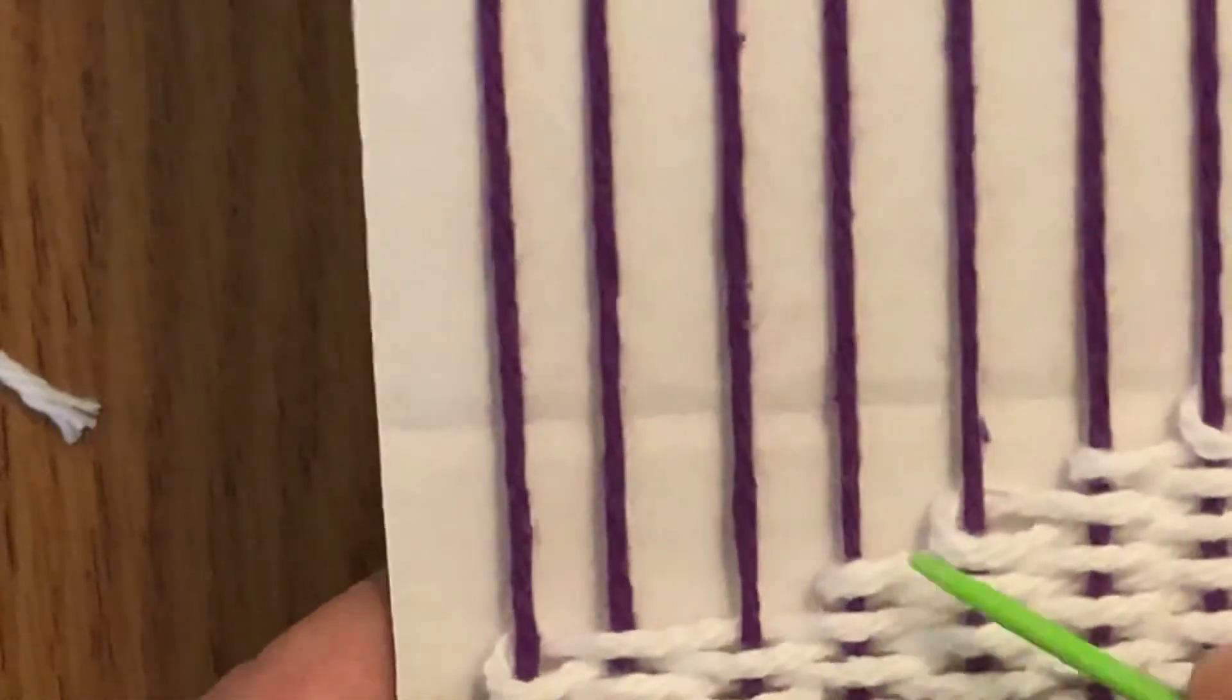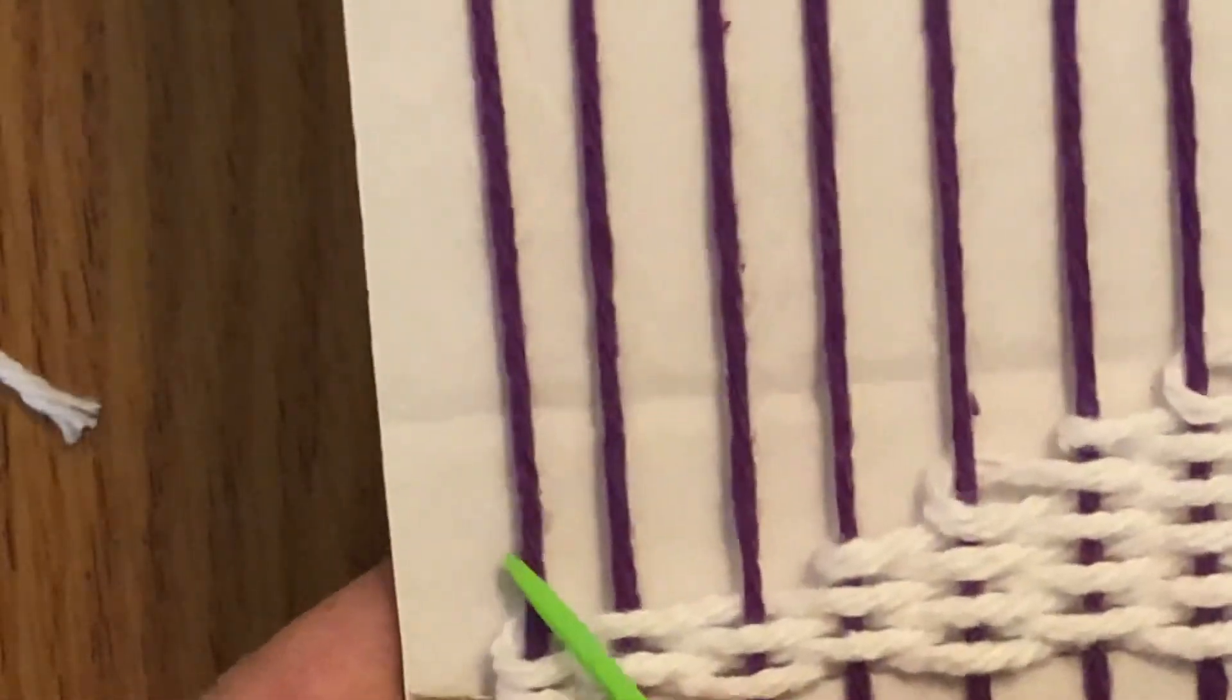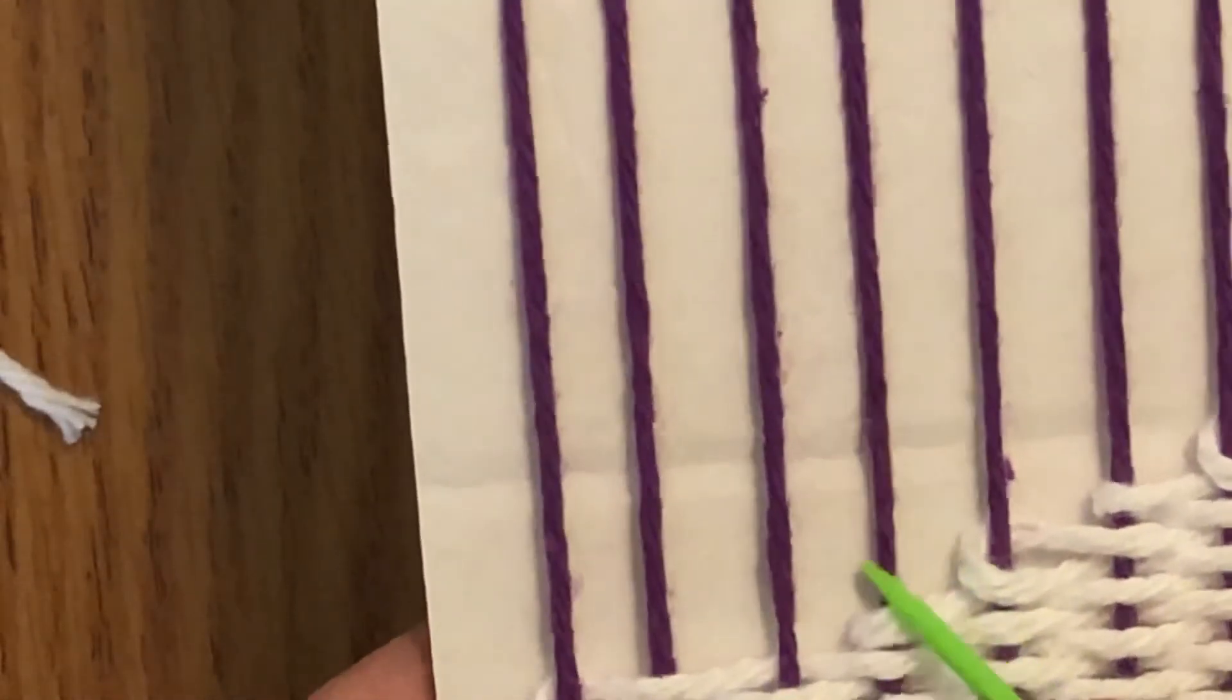Start from this side and work my way over. You want to make sure you wrap it around wherever you ended with your first wedge. You want it to come across and hook on that same warp thread. On this, if I were doing another wedge coming this way, I would end on this one first.